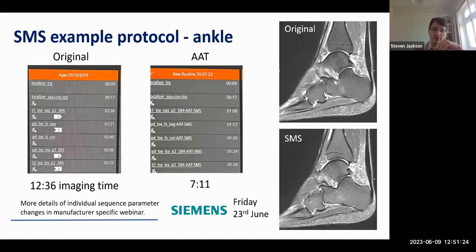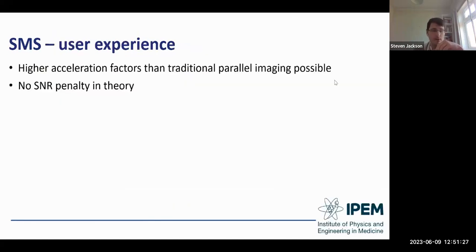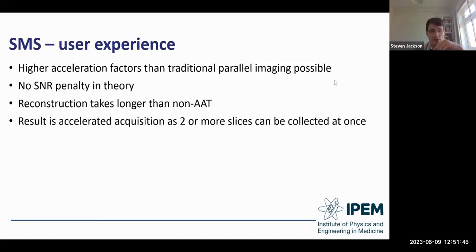An example protocol: an original non-AAT ankle protocol came in at around 12 and a half minutes. An AAT version using only the SMS TSE technology on a Siemens scanner reduced that time by around five minutes, with comparable image quality. More details of individual parameter changes will be in the third webinar on the 23rd of June. One consideration: reconstruction takes a little bit longer than non-AAT sequences, which may require rejigging your protocol order — you don't want a long-reconstructing sequence last, as you'll be waiting before you can decide whether to bring the patient off the table.